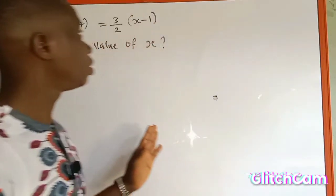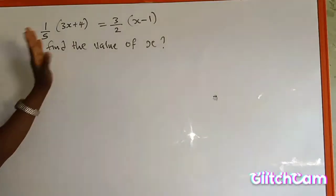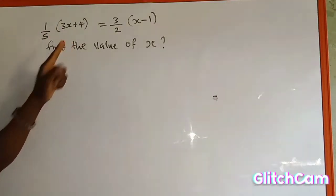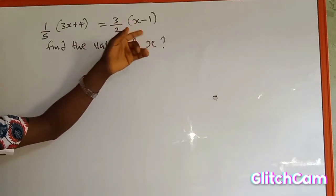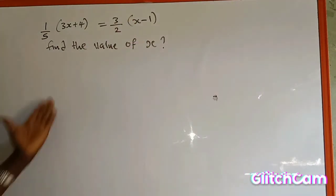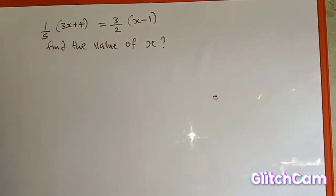So let's read the equation on the board. The equation says 1 over 5 to the bracket of 3s plus 4 is equal to 3 over 2 into the bracket of s minus 1. And we are asked to find the value of s in this equation. And remember, this equation involves fractions.